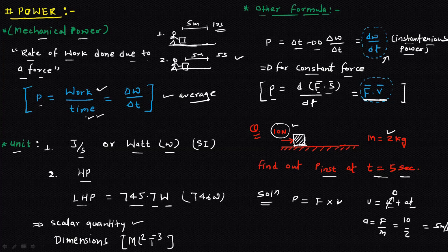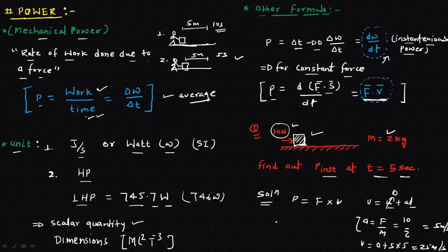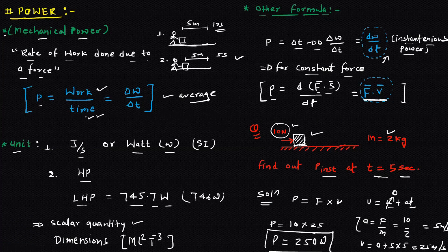With acceleration 5 m/s², we calculate velocity at t = 5 seconds: v = 0 + 5 × 5 = 25 m/s. So the velocity at t = 5 seconds is 25 m/s. The instantaneous power is then P = F × v = 10 × 25 = 250 watts.